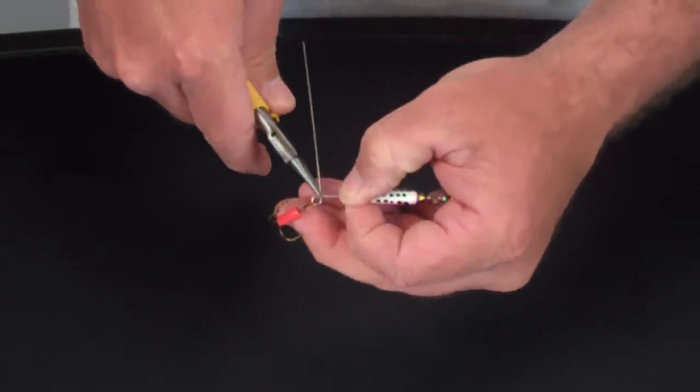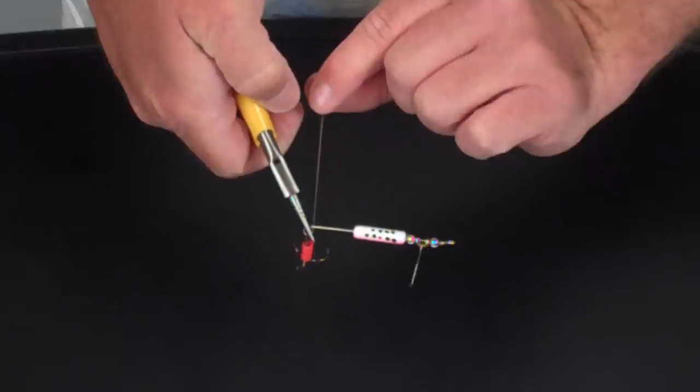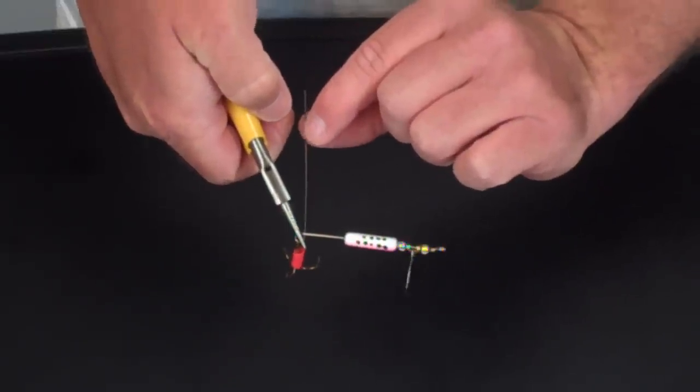We'll grab that loop with our round nose pliers. We'll take our tag end of our wire and wrap it two times around our main shaft.